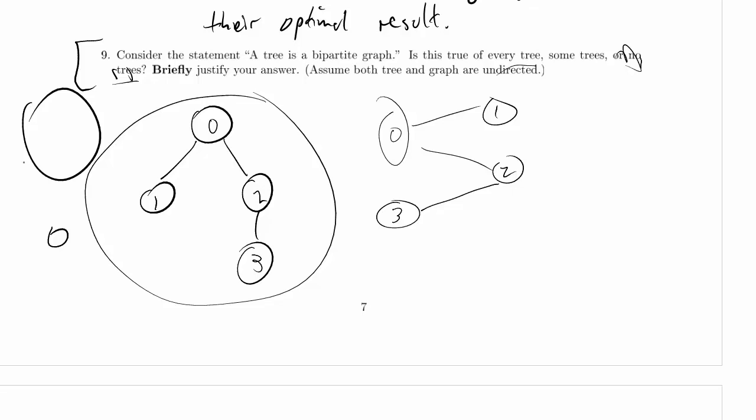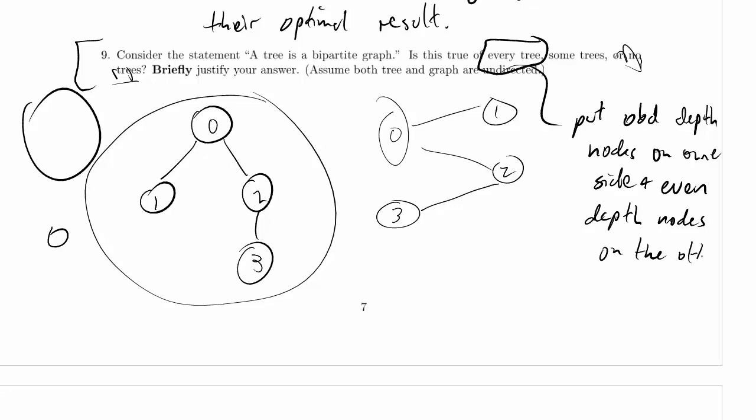So in fact, this is true of every tree. And how do we show that? We're going to put odd depth nodes on one side and even depth nodes on the other, and it'll be guaranteed bipartite.